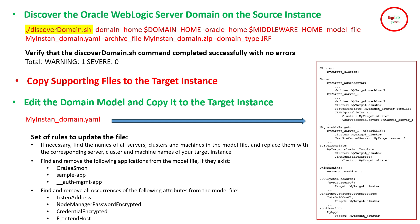The first command is discover domain. The script to discover the domain is discover_domain.sh. You provide the domain home location, the middleware home location for the source environment, the model file name (e.g., my_instance_domain.yaml), and the archive zip file — which will contain all resources including deployed application binaries from the source environment. You also specify the domain type as JRF.